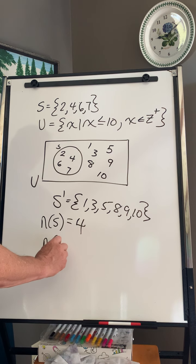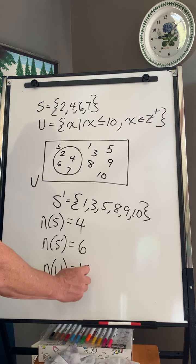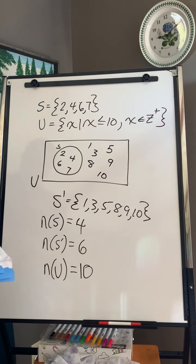Number of elements in the complement of S: 1, 2, 3, 4, 5, 6. And then, number of elements in the universal set. What do we got? 4 plus 6 is 10. So that's example 5. Pretty basic.